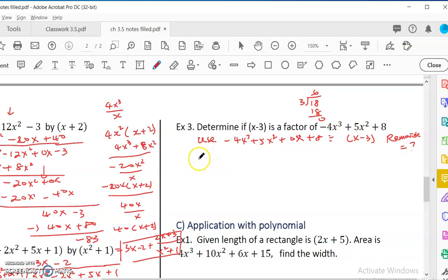So I will use synthetics. Negative 4, 5, 0, 8. Divide by 3, because that is x minus k. So bring down negative 4. So 3 times negative 4 is negative 12. Add together is -7. Remember add. So 3 times -7 is -21. -21 plus 0 is -21. -21 times 3 is -63. -63 plus 8 is -55. So it is not 0, right? Not 0. So it is not a factor. x minus 3 is not a factor.